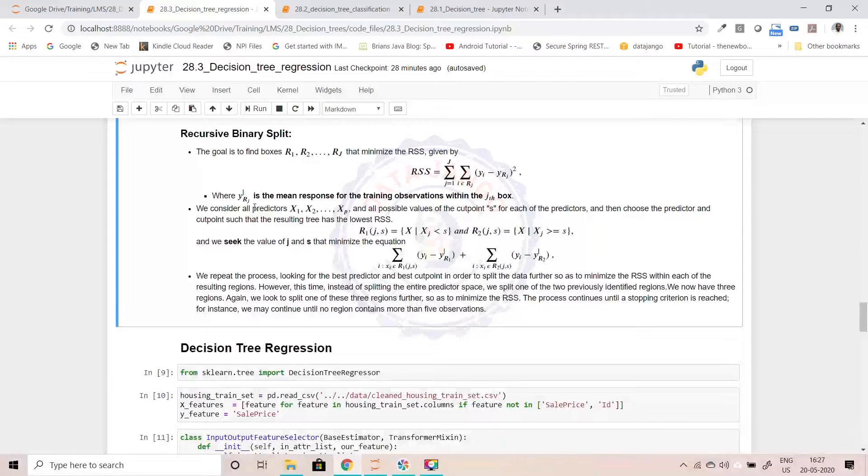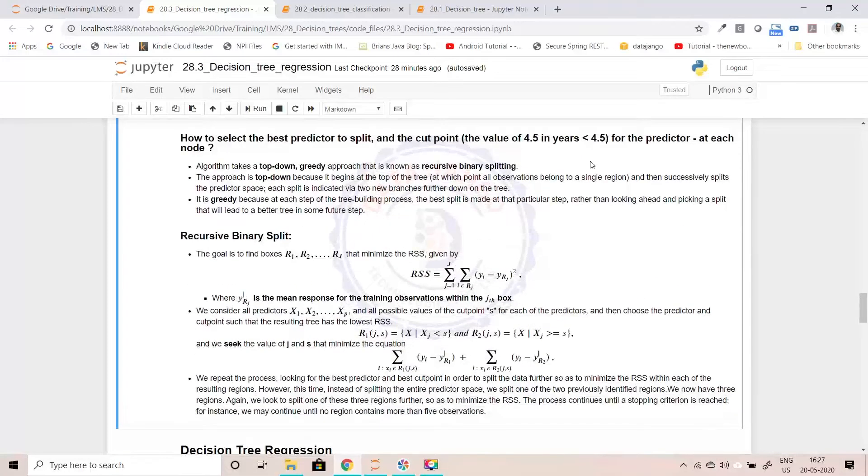So we consider all predictors x1, x2 and so on xp, and all possible values of cut points S. As I said, all possible cut points of S means, for years there may be 10 cut points, 1, 1.5, 1.2. For each predictor. Again, for the hits, we will have different cut points. For other columns also, we will have different cut points. And then, choose the predictor and the cut point such that the resulting tree has the lowest RSS.